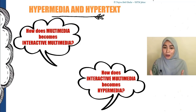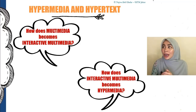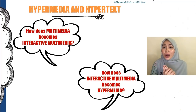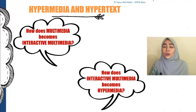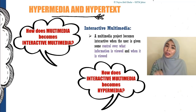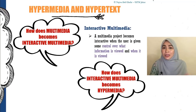Let's move on to hypermedia and hypertext. How does multimedia become interactive multimedia? A multimedia project can be linear with no interaction, but when the project has interactions between the user and the application, it becomes interactive multimedia. You provide interaction by providing navigation — allowing your user to control where they want to go and how they want to use your system. A multimedia project becomes interactive when the user is given control over what information they want to view and when they want to view it.